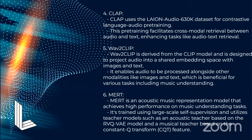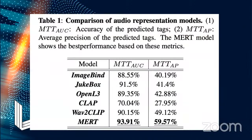MERT is an acoustic music representation model that achieves better performance on music understanding tasks — understanding the sentiment or what the audio signals are trying to convey. It is trained using large-scale self-supervision methods and utilizes teacher models such as the RVQ-VAE model based on the CQT feature. In the comparison of the various models analyzed based on accuracy of predicted tags and average position of predicted tags: ImageBind gave an accuracy of 88.5% and 41.19%, Jukebox 91.5%, but compared to all of these, MERT gives the highest accuracy of 93.91% and 59.57%.